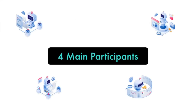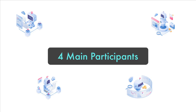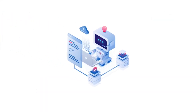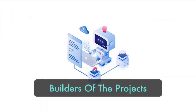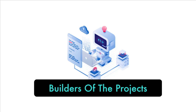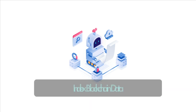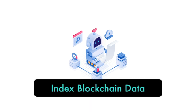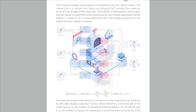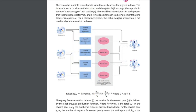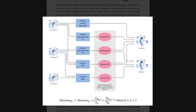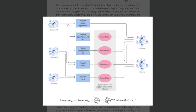SubQuery has 4 main participants in this structure, starting with the architects. They are the builders of the SubQuery projects that the network runs on. Their projects are then indexed by the indexers, who index the blockchain data and make it available using their hardware and technical skills. These indexers are paid based on how much work they've done and how much they've staked on the network.